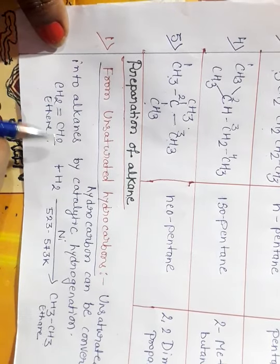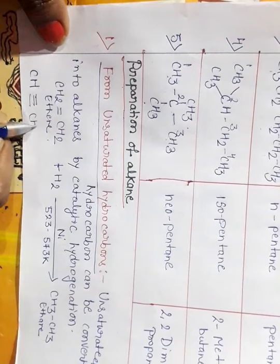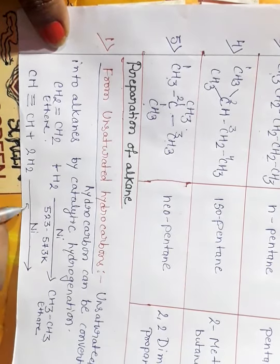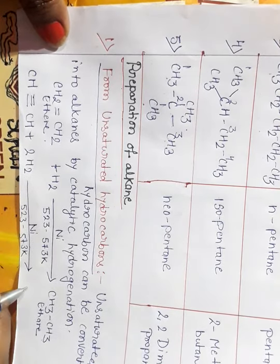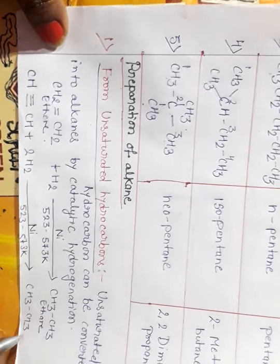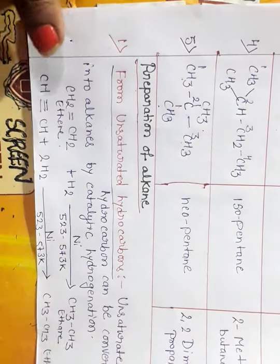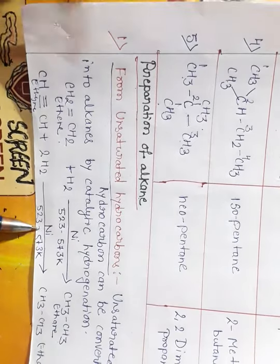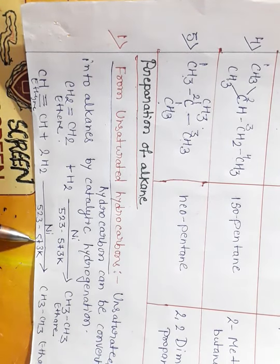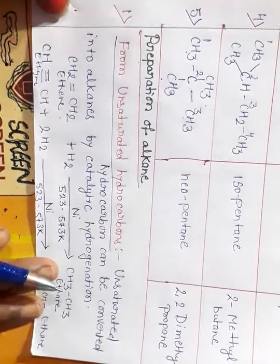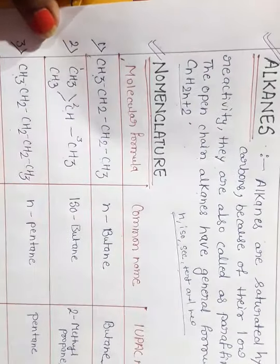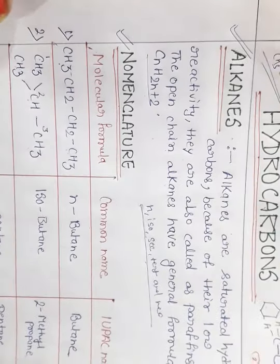When we take an unsaturated hydrocarbon like ethene and react it with hydrogen at 523–573 Kelvin, it is converted into ethane, a saturated alkane. Today we have studied alkanes — their nomenclature and preparation. In the next class we will discuss the next compound, which is alkenes.